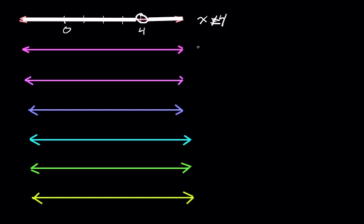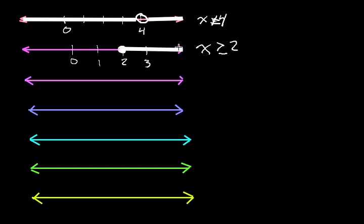Now let's try some more basic inequalities. How about we graph x is greater than or equal to 2. Notice that there's an equal to sign, so we are going to have a closed circle at 2, because x can equal 2. The inequality says x is greater than or equal to 2, which means we are going to be shading to the right. So 2 is filled in and all the points to the right are filled in as well.